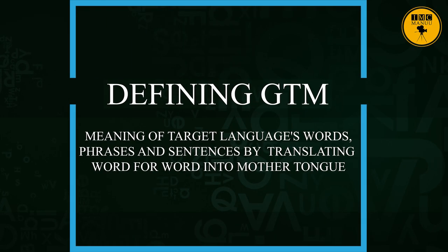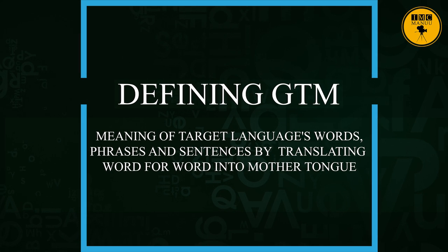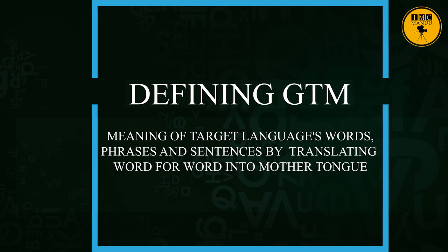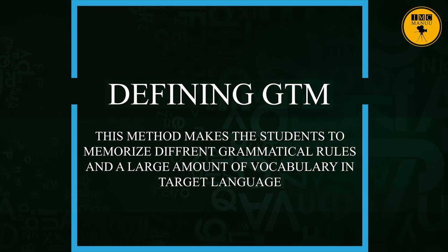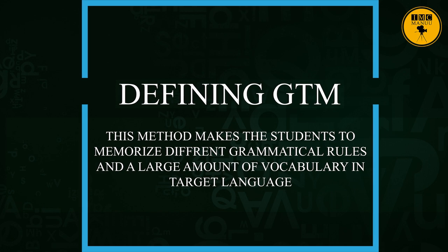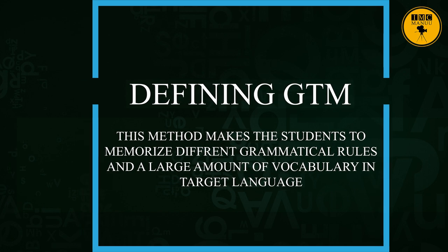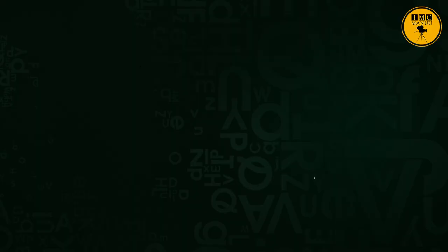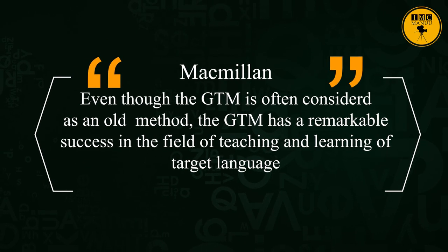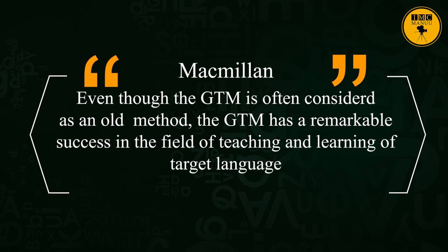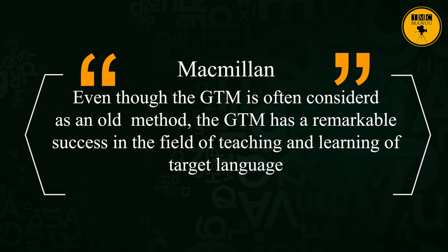GTM teaches the meaning of the target language — its words, phrases, and sentences — by translating word for word into the mother tongue. This method makes students memorize different grammatical rules and a large amount of vocabulary in the target language. According to Macmillan, even though GTM is often considered an old method, it has remarkable success in the field of teaching and learning.